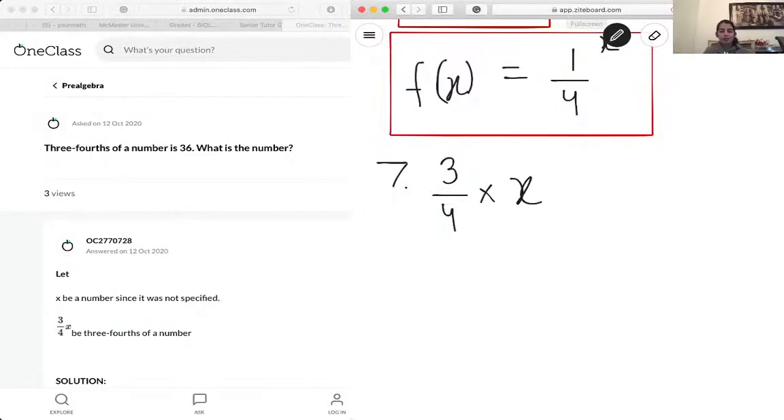Is 36, which means it equals 36. So initially, what our function or our thing to solve for is 3 over 4x equals 36.